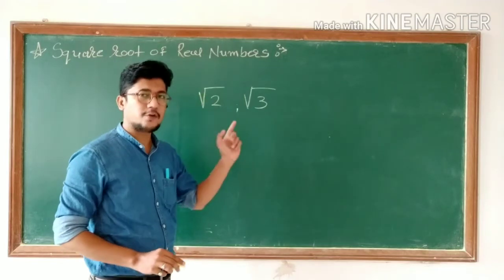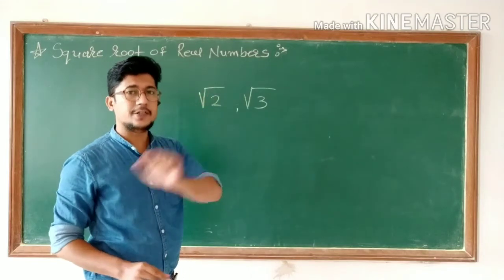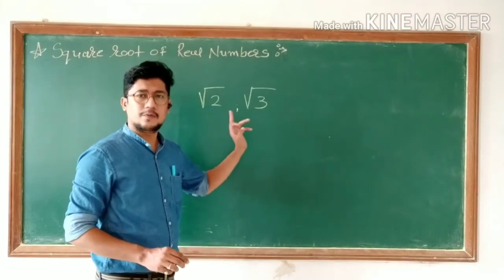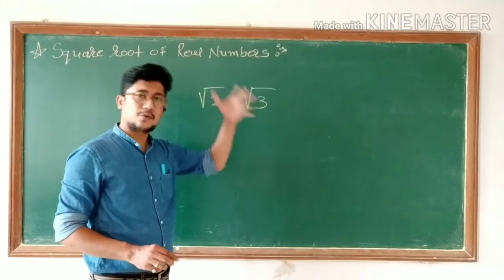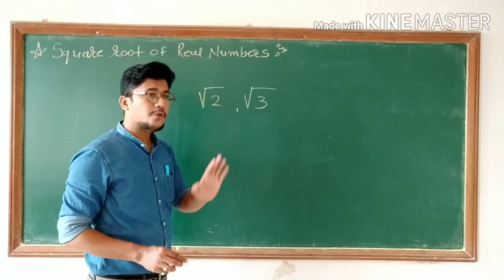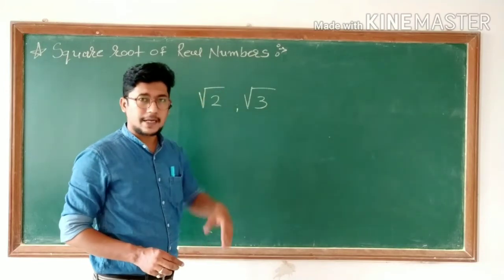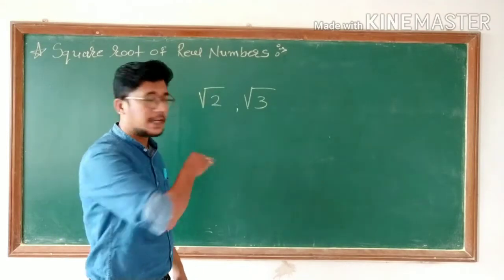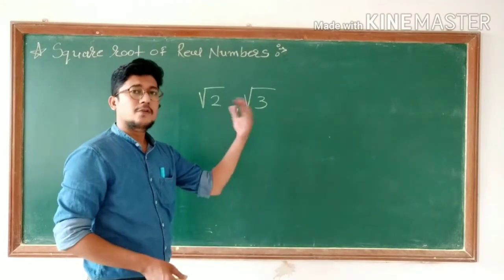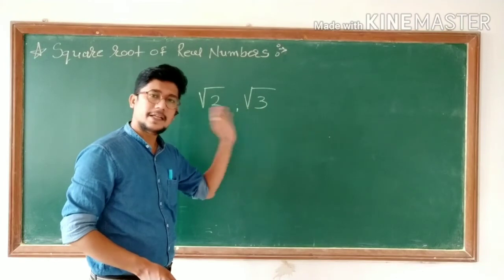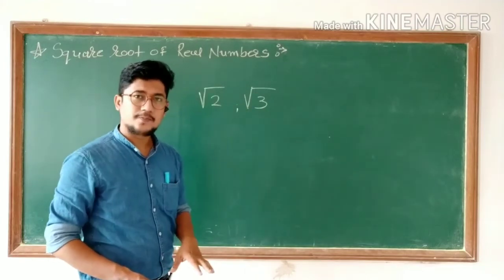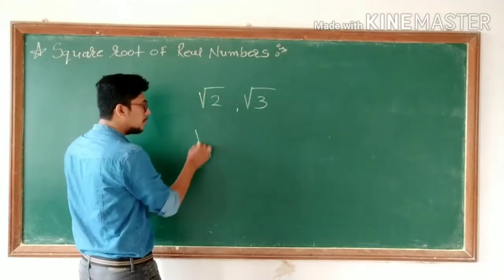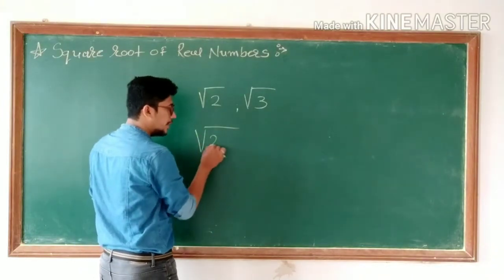If you haven't seen it, then you can come and continue with this online session. You know how to present square root of 3, 4, 5, 6, 7, 11, 12 on a number line by using a square root spiral. You can denote all these things on the number line. But what about square root of 2.5?